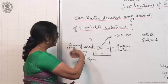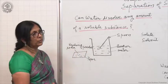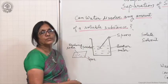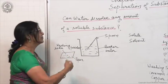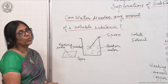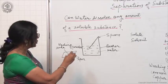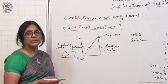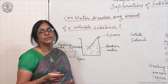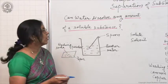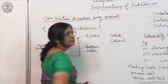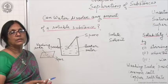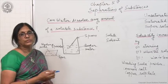Once it has dissolved, add another teaspoonful of washing powder and dissolve it by stirring. If it dissolves, then add one more teaspoonful. The solution which is capable of dissolving more of a soluble solid substance is called an unsaturated solution — a solution which can dissolve some more solid substance in it.